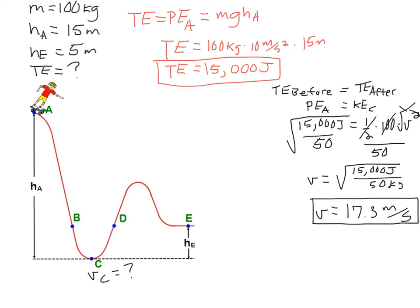So the velocity is 17.3 meters per second at point C, and now there's usually one more step that we're going to do, and that's typically finding one of the energies or the height of the velocity at some other part of the track. On this problem, it was finding the kinetic energy at E.